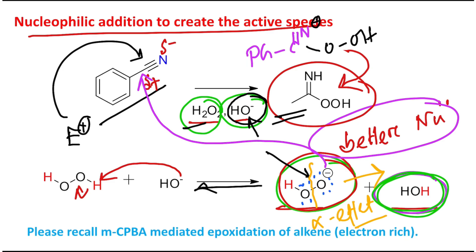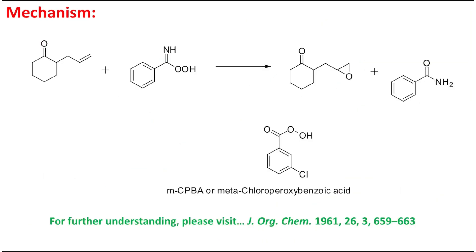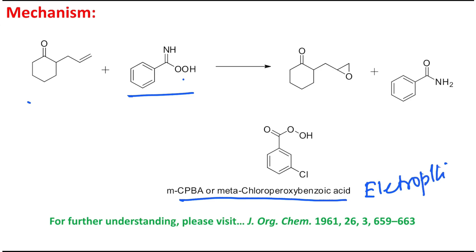You may consider this as a per-acid, and I request you to please recall the MCPBA-mediated epoxidation of alkene — I shall come back to that in detail shortly. This active species is produced from benzo nitrile and will react with this molecule. You can compare it with MCPBA (meta-chloroperoxybenzoic acid), which is responsible for electrophilic epoxidation.